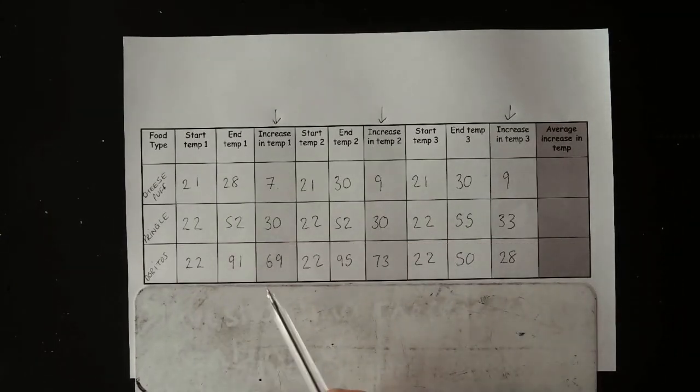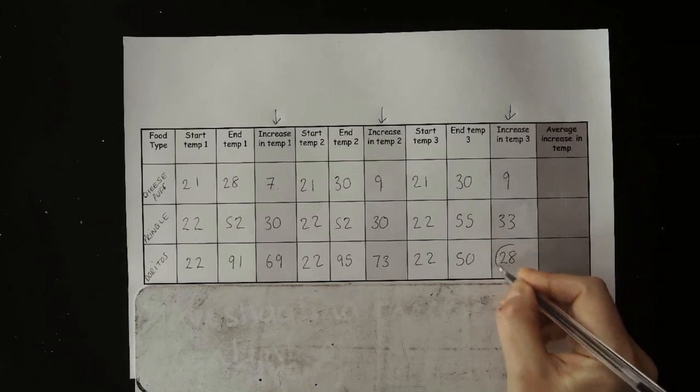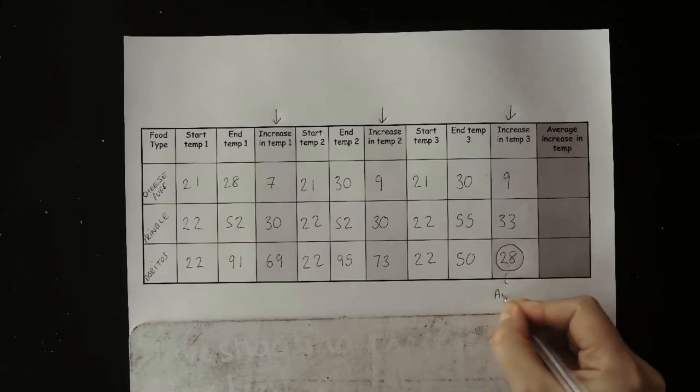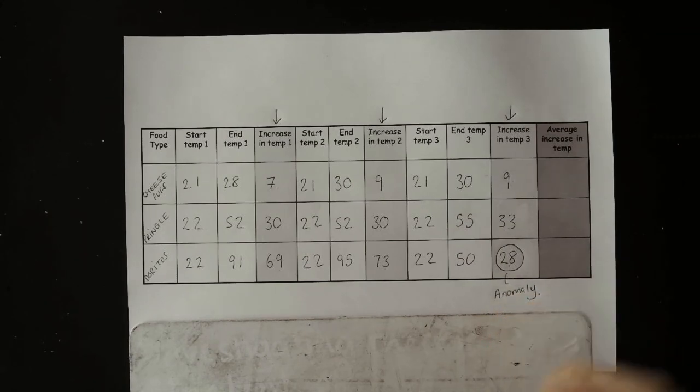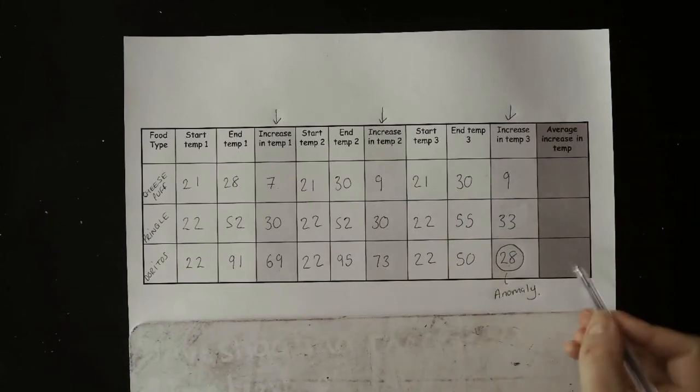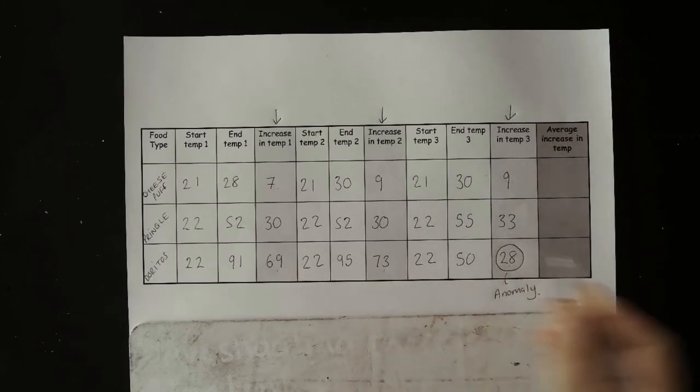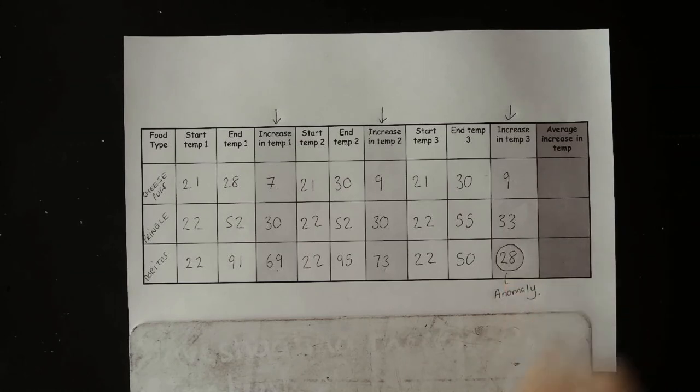For the Doritos, I have 69, 73, and 28. This 28 does not fit the pattern. So I'm going to circle it, and I'm going to label it anomaly. Now, anomalies don't get included in your average results. So to work out the average here, I do 69 plus 73, and I divide by 2 because I'm only using two of the values, that will give me my average. You do not include an anomaly when you're working out your average.